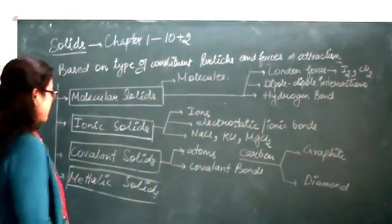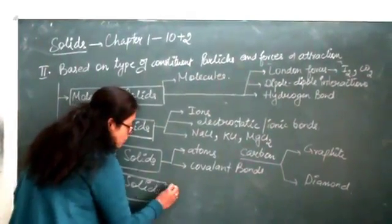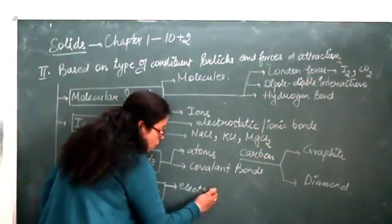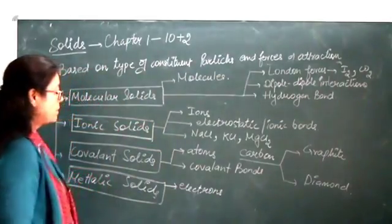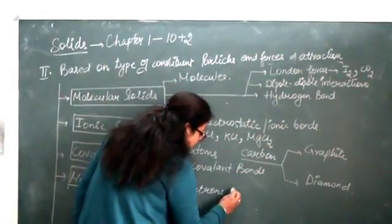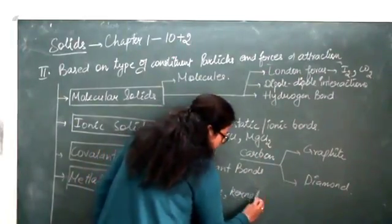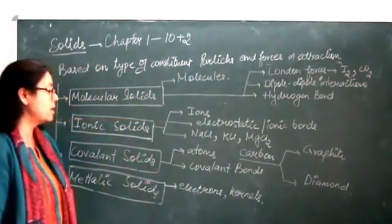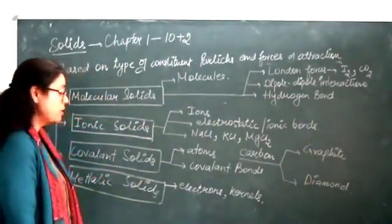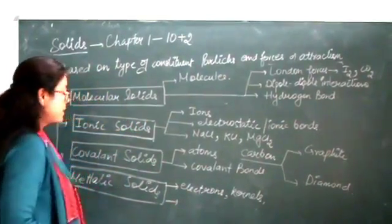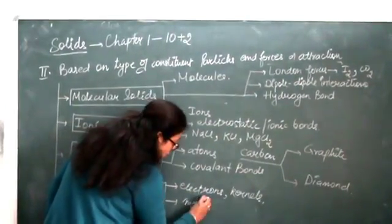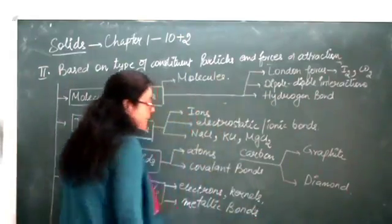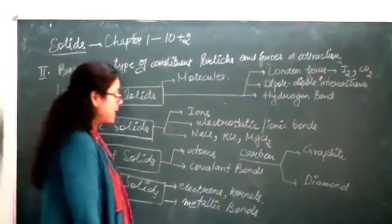The next category is metallic solids. Metallic solids have constituent particles which are metals — or we can say the constituent particles are electrons and kernels. Electrons are negatively charged whereas kernels are positively charged. They have special forces of attraction between them, which are known as metallic bonds.